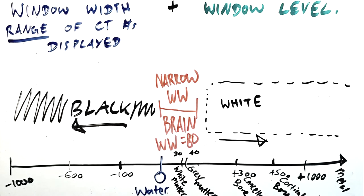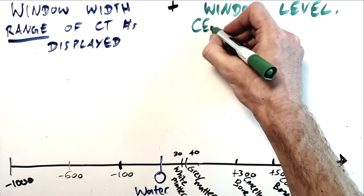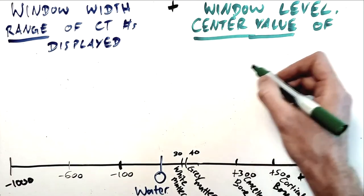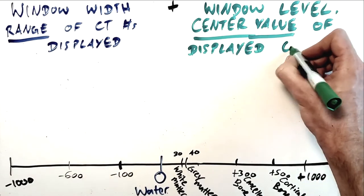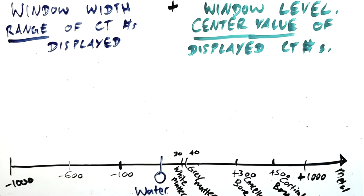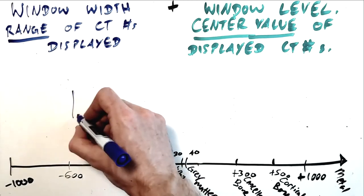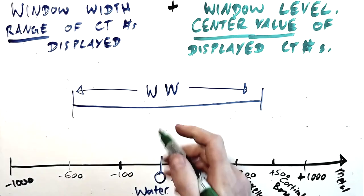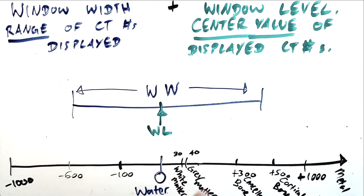As well as controlling how widely distributed our grayscale is across CT numbers, we can also control where that grayscale is centered. And this center point is referred to as the window level. With window width, we're asking how close or how far apart are the densities that we're looking at? Whereas with window level, we're simply asking are we looking at high density or low density structures?